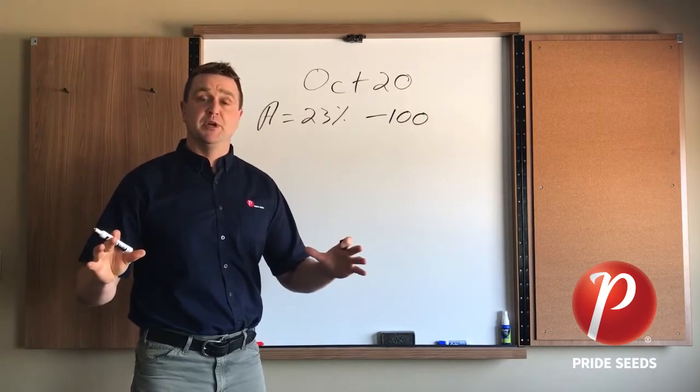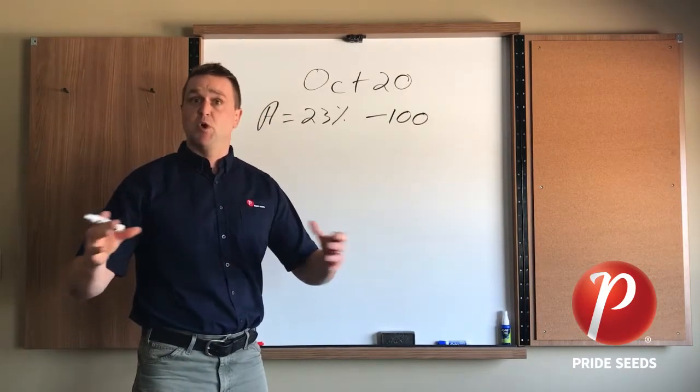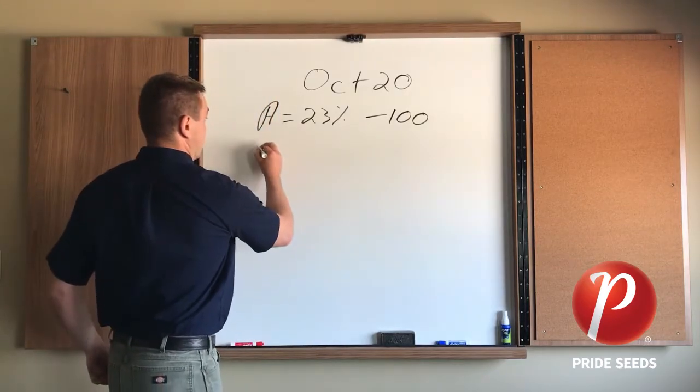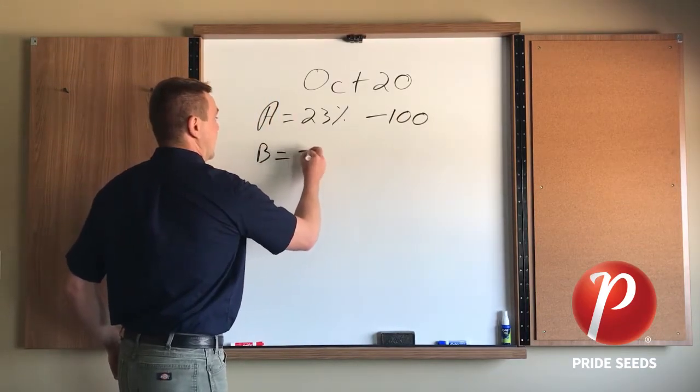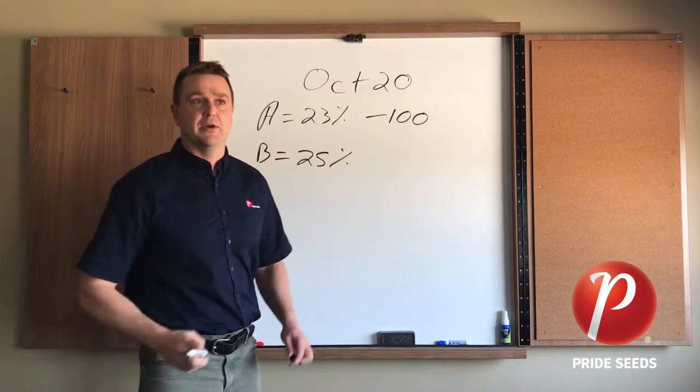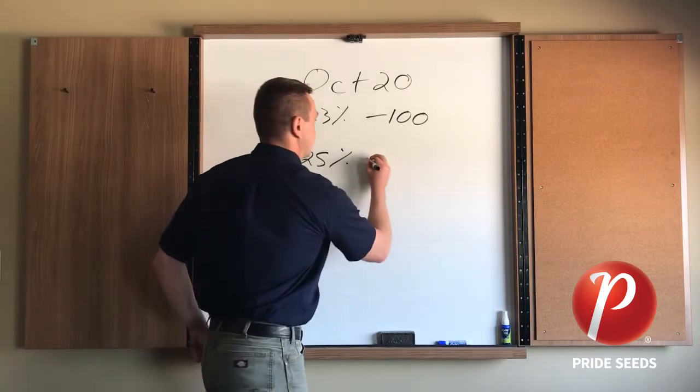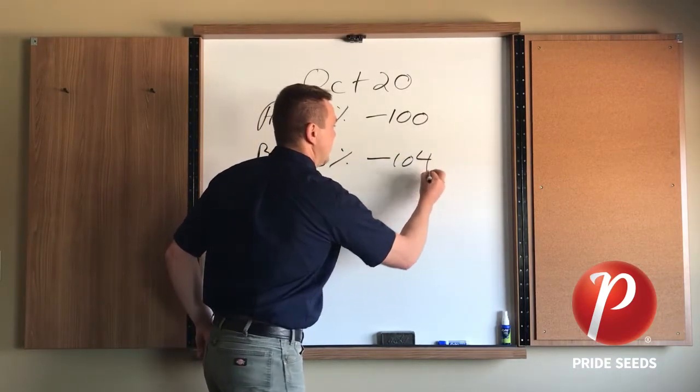And we've got a new corn that we're bringing to the market, one that we're investigating, we want to know how to name it and to list it for its maturity and that's hybrid B and it comes off at 25%. So it's 2% wetter. So what would we call it in terms of relative maturity? We'd refer to that as 104 day corn.